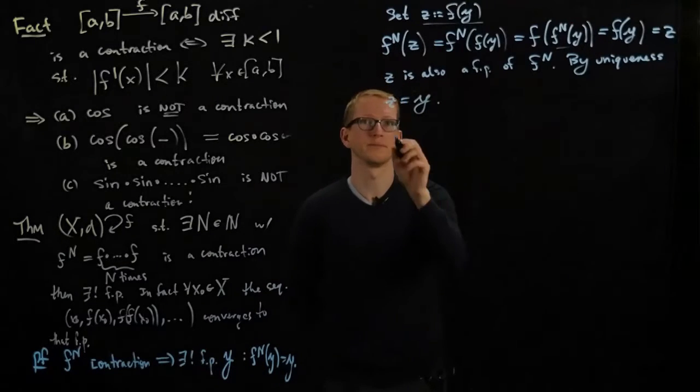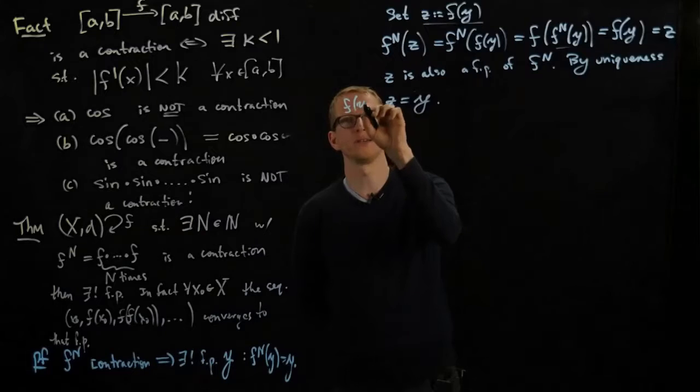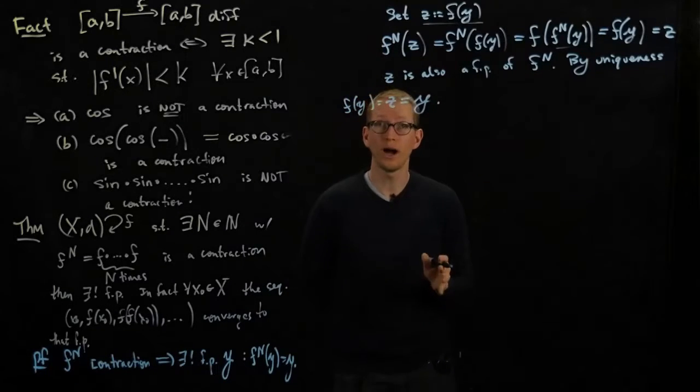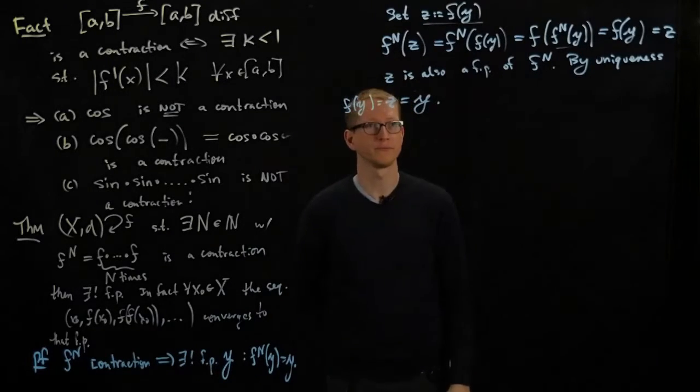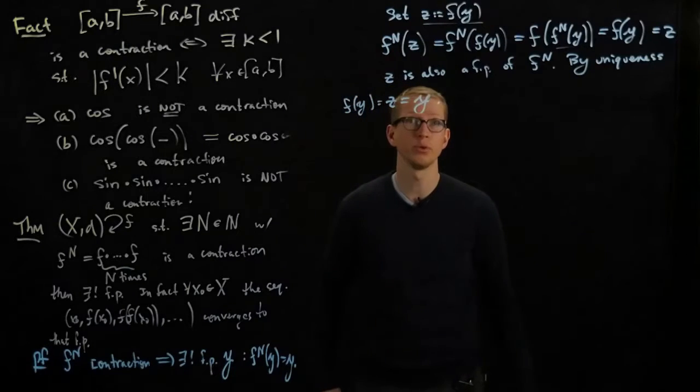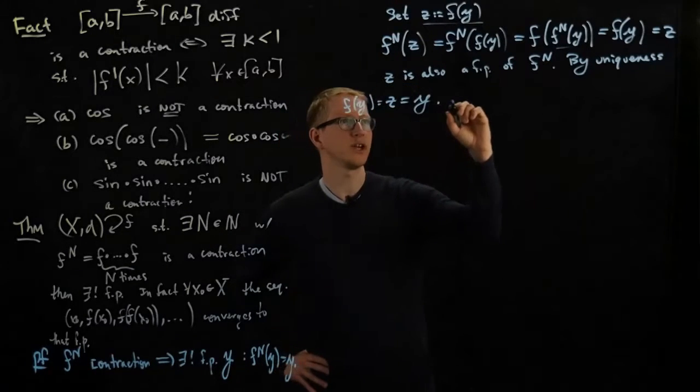In other words, since z is f of y, f of y equals y. And therefore, y is also a fixed point of f. So we found our fixed point. And the only thing left to check is that now consider the sequence before for an arbitrary initial condition.